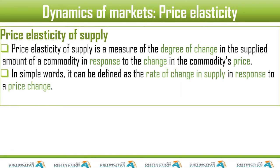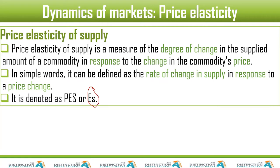One key difference is that demand is downward sloping and supply is upward sloping. There are five degrees of elasticity, two of which are identical to those in demand. PES is denoted as PES or ES. The formula: PES equals percentage change in quantity supplied divided by percentage change in price.